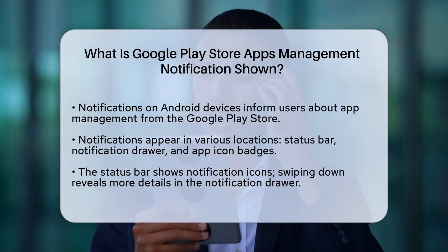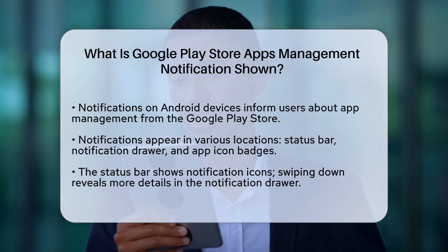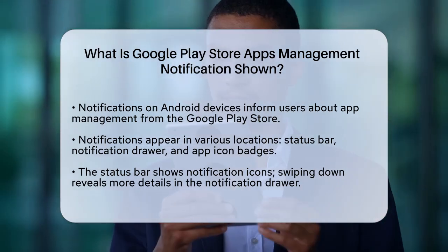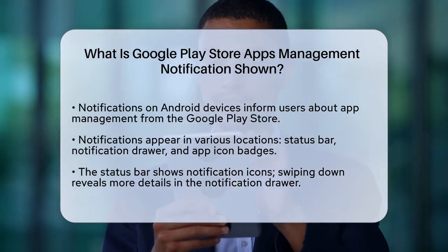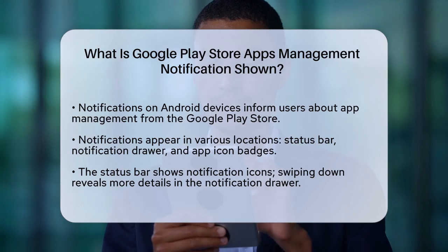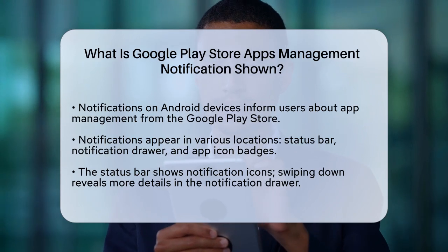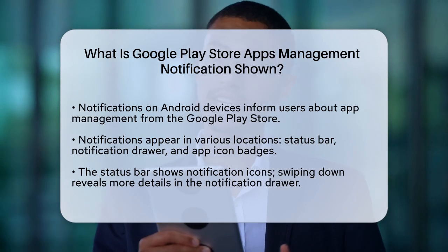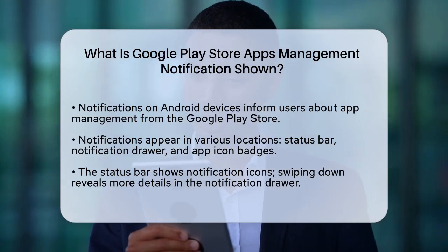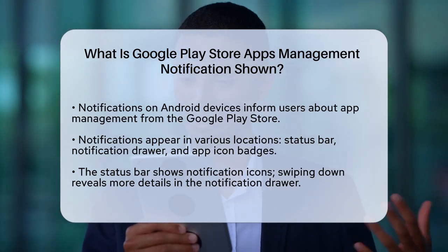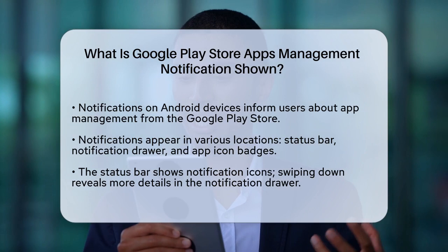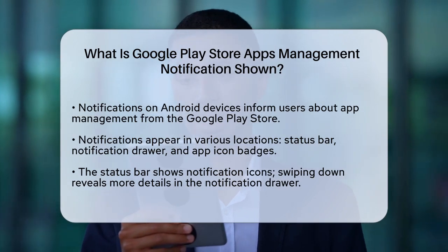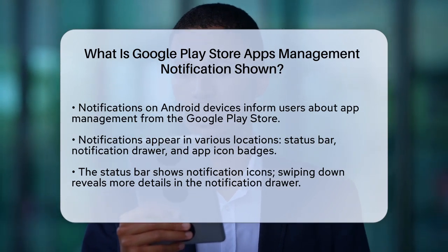These notifications can appear in several places on your device, such as the status bar, the notification drawer, and even as badges on the app's icon. Notifications first appear as an icon in the status bar at the top of your screen. If you swipe down on the status bar, you'll open the notification drawer, where you can see more details about each notification.